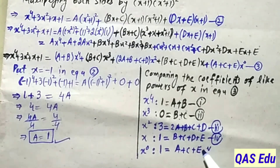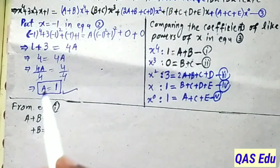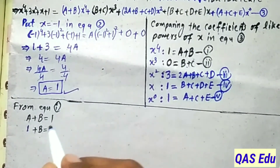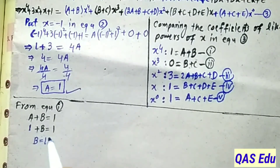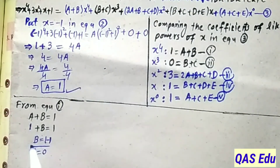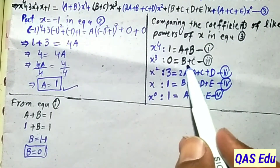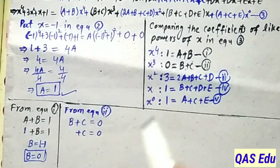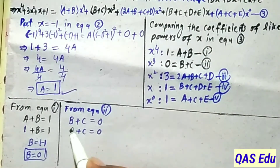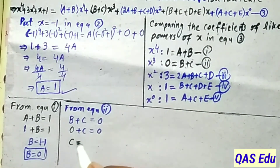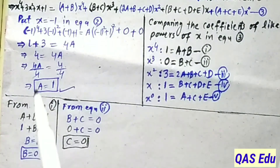From equation number 1: A + B = 1. Putting A = 1 gives 1 + B = 1, so B = 0. Then from equation number 2: B + C = 0. Substituting B = 0 gives 0 + C = 0, so C = 0.